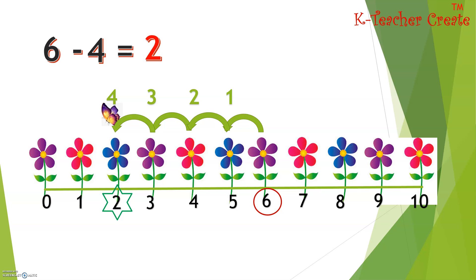That's how we do subtraction using a number line. First, we circle the bigger number, and next, we count backwards.